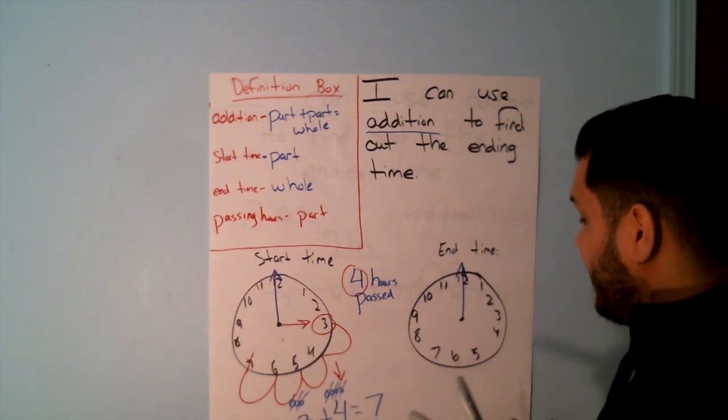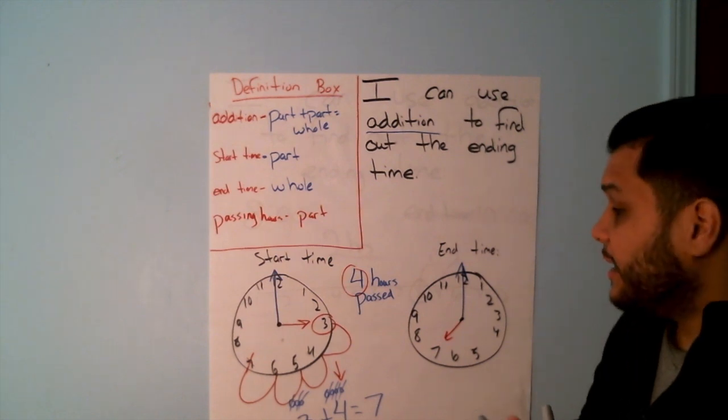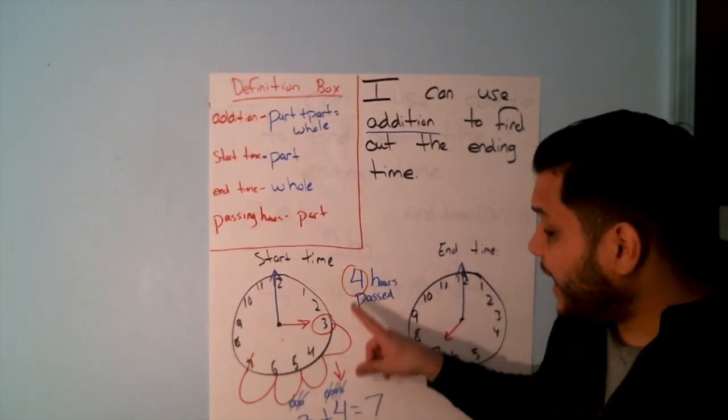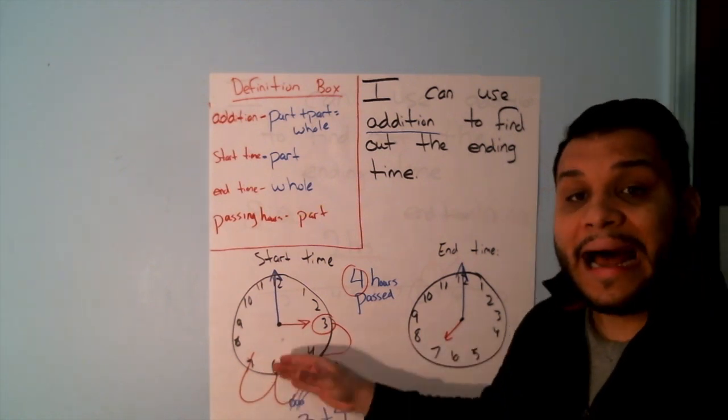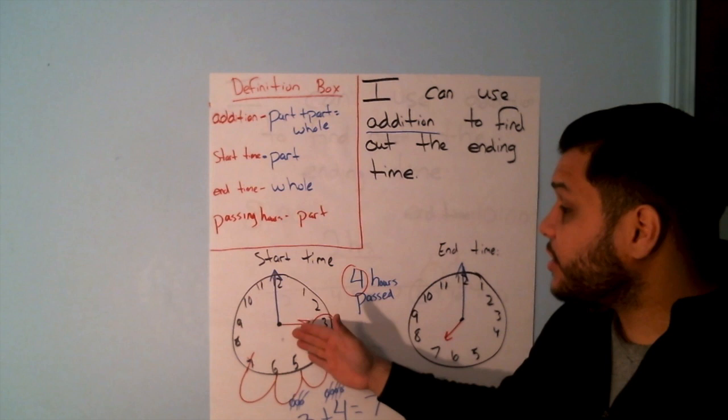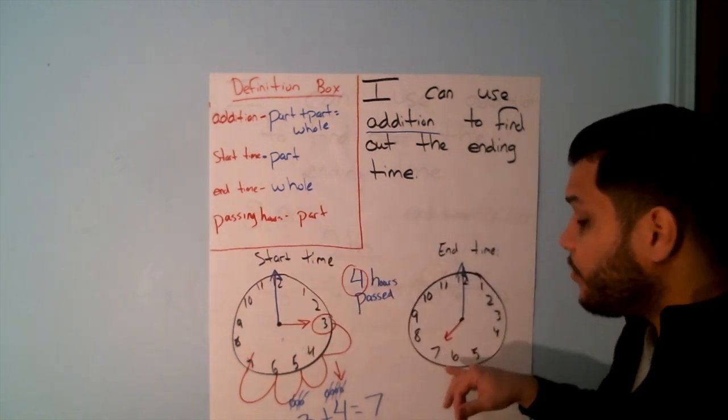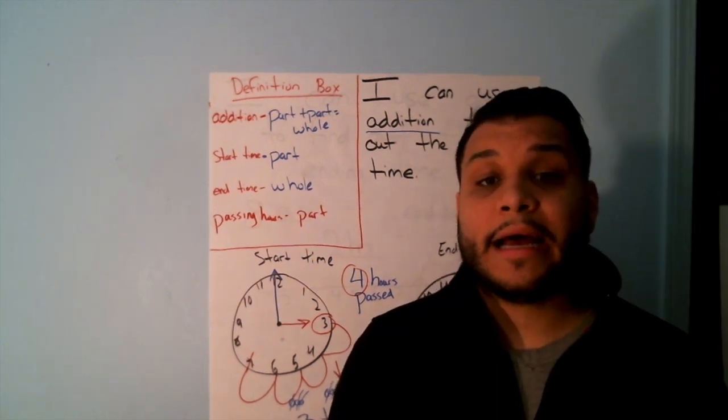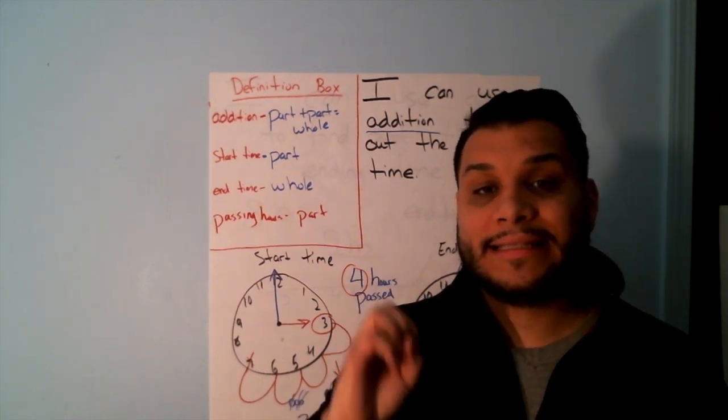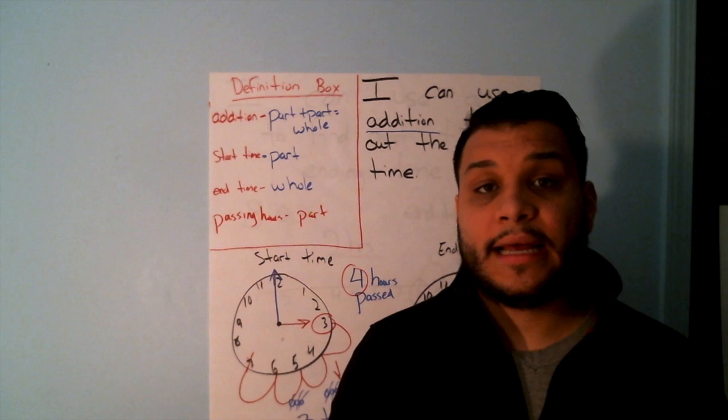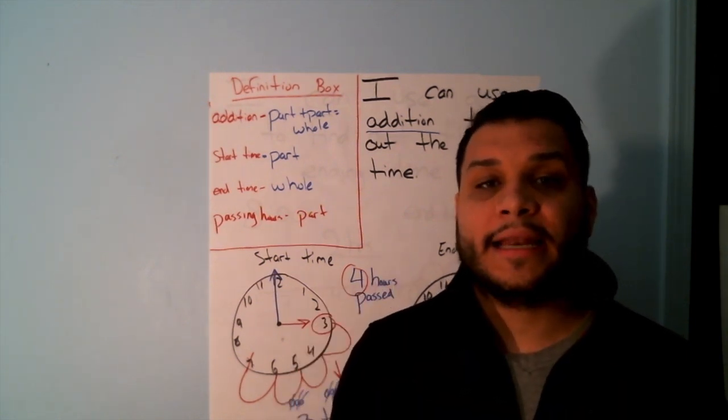My minute hand stays the same. And I come to my hour hand. There have been 4 hours. I have 4 mountains. 1 mountain, 2 mountain, 3 mountain, 4 mountains. I just showed that 3 o'clock plus 4 more hours equals 7 o'clock. When you guys are doing your individual work, you are going to identify your end time. You will be providing your start time and how many hours have passed. And then you have to identify what is the ending time.